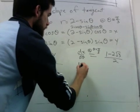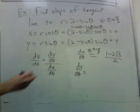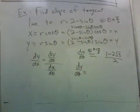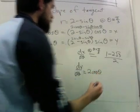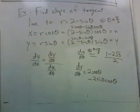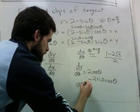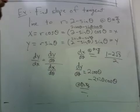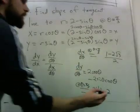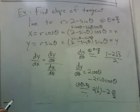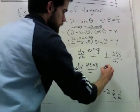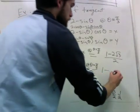Now we do the same thing for dy/dθ. The y expression is 2 sine theta minus sine squared theta, so the derivative will be 2 cosine theta minus 2 sine theta cosine theta. At theta equals pi over 3, we get 2 cosine(π/3), which is 2 times 1/2, minus 2 times sine(π/3) times root 3 over 2. Simplifying, we get 1 minus root 3 over 2.